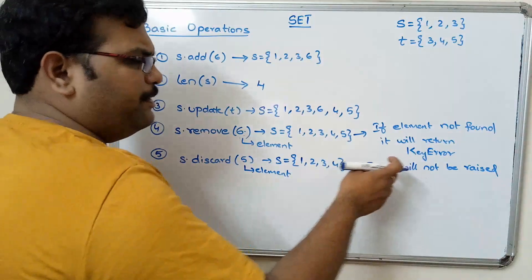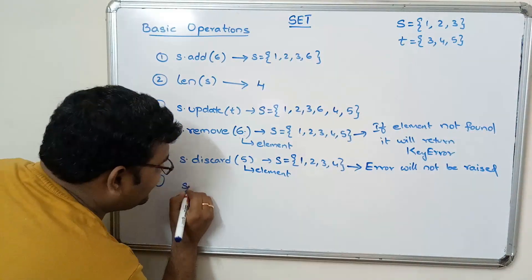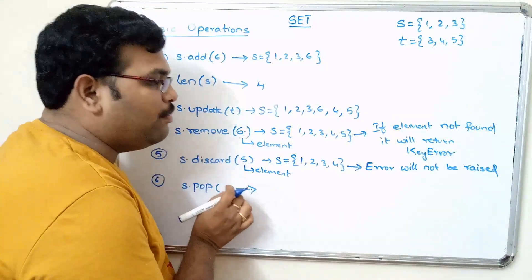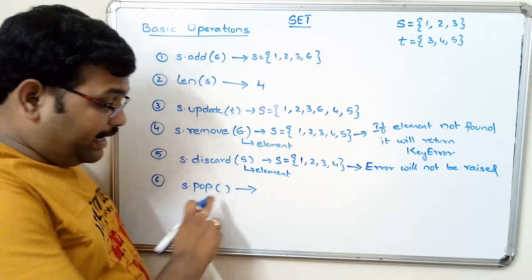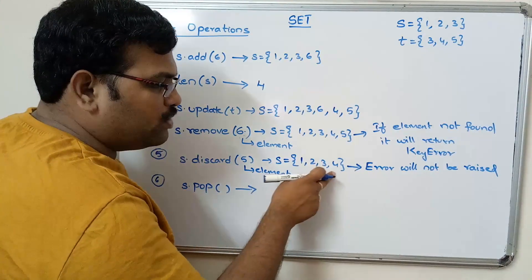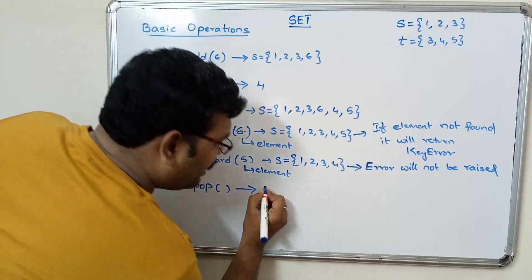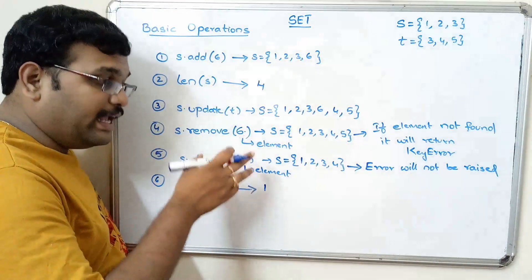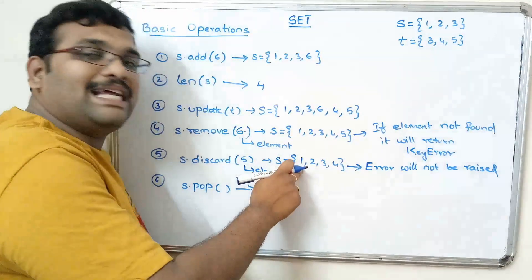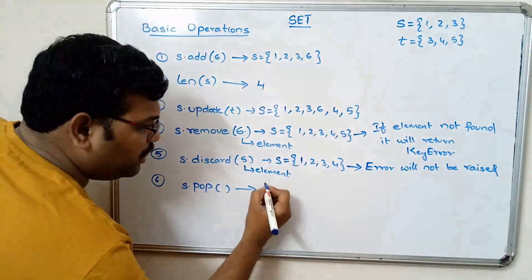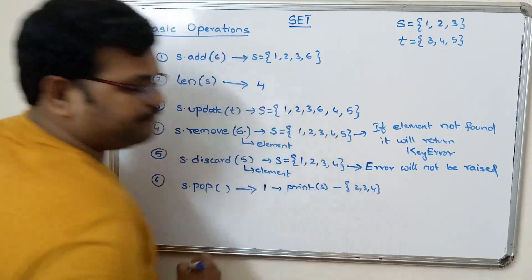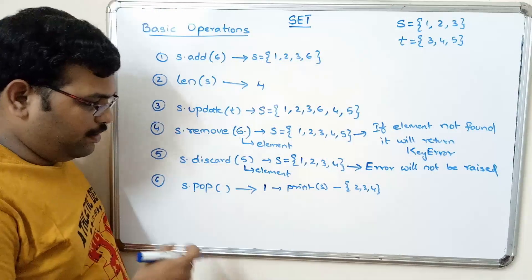The sixth operation is pop: s.pop() does not take any argument — it blindly removes and returns the first element of the set. So if s = {1, 2, 3, 4}, s.pop() will remove and return 1, and afterwards s will be {2, 3, 4}.